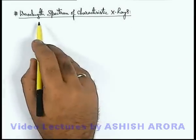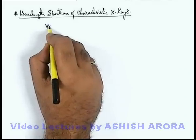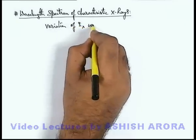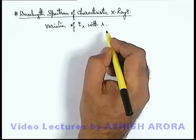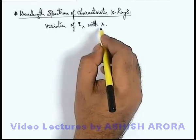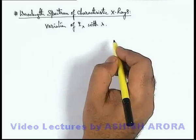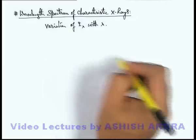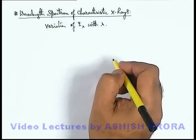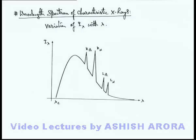Now let's continue our discussion with the wavelength spectrum of characteristic x-rays. Just like continuous x-rays, here also we are going to discuss the variation of spectral intensity I-lambda with the wavelength. The spectral intensity exists in a way that from the cutoff wavelength, it first increases and then gradually drops because of breaking radiation, which for higher wavelengths we term as bremsstrahlung.